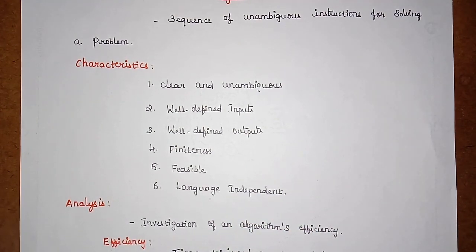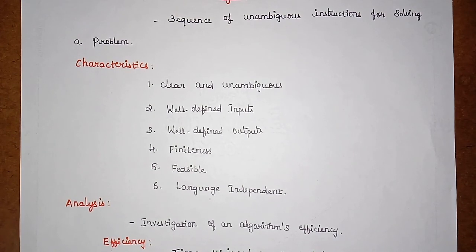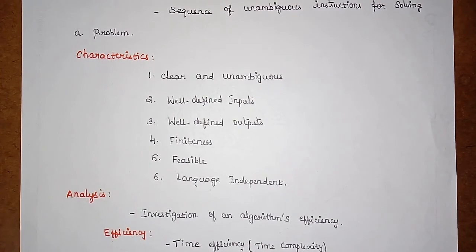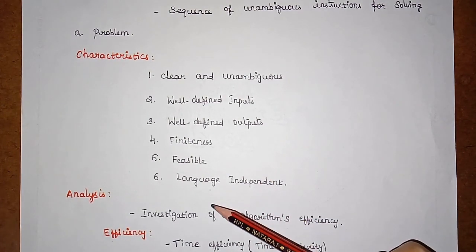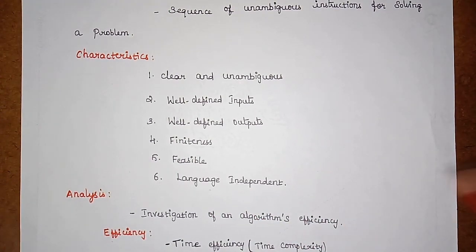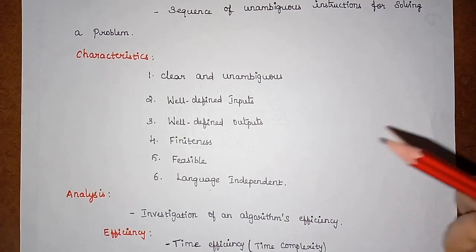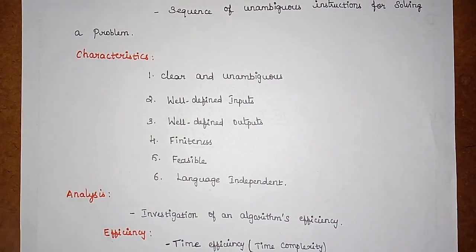The fourth characteristic is finiteness — the algorithm should run in a finite amount of time and not take an infinite amount of time to execute. The fifth is feasibility — there should be a possible way to solve the problem; the algorithm should be feasible. The final characteristic is language independence — the algorithm should be independent of programming languages and able to solve the problem regardless of which language is used.